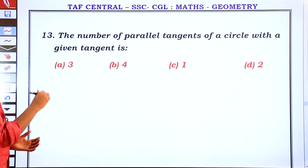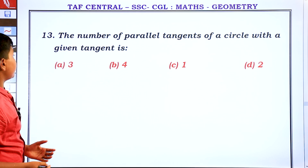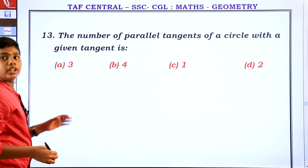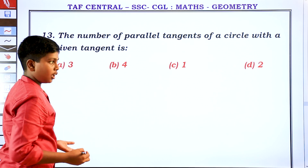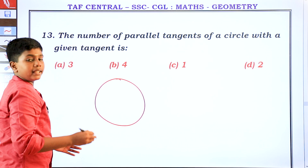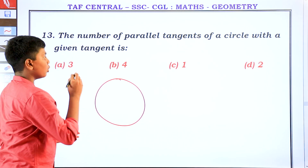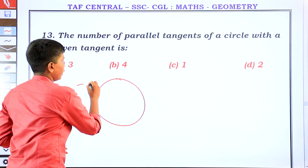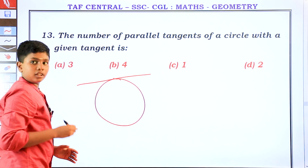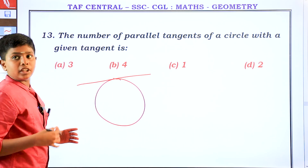The number of parallel tangents of a circle with a given tangent is? What I'm saying here is, there is a circle, and in this circle there are many parallel tangents. Tangents are lines that touch the outer point of a circle. So how many parallel tangents are there?